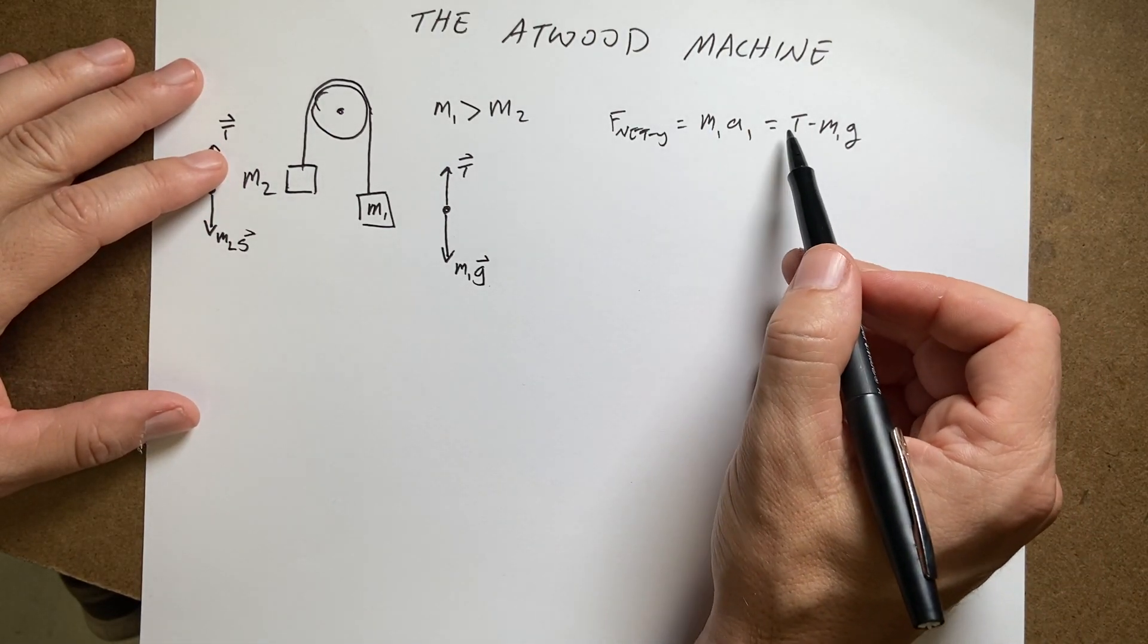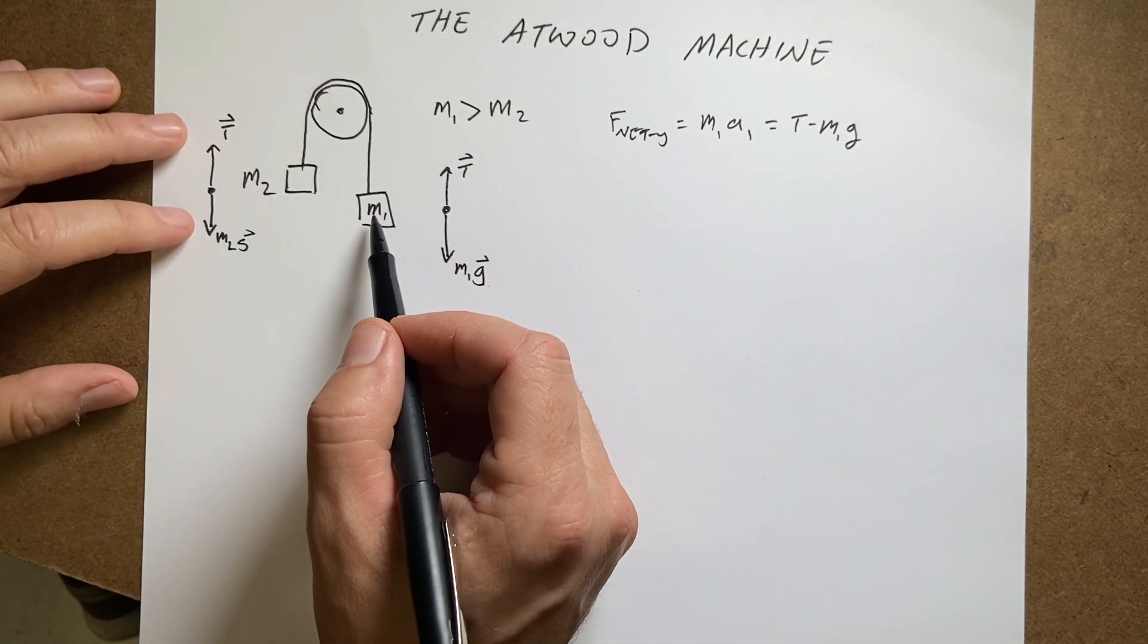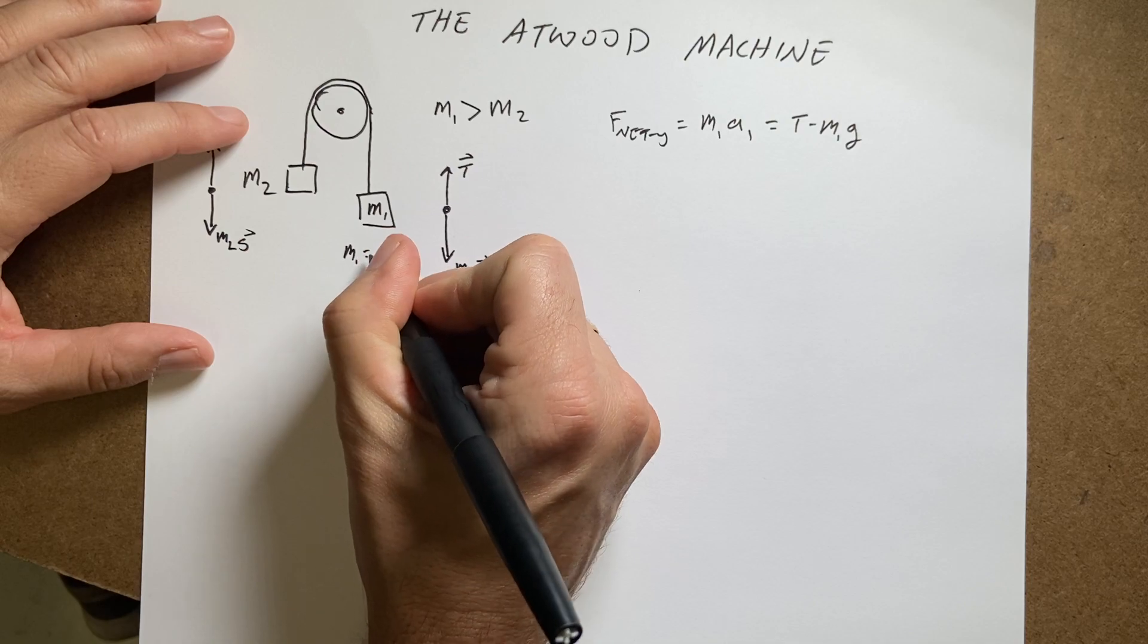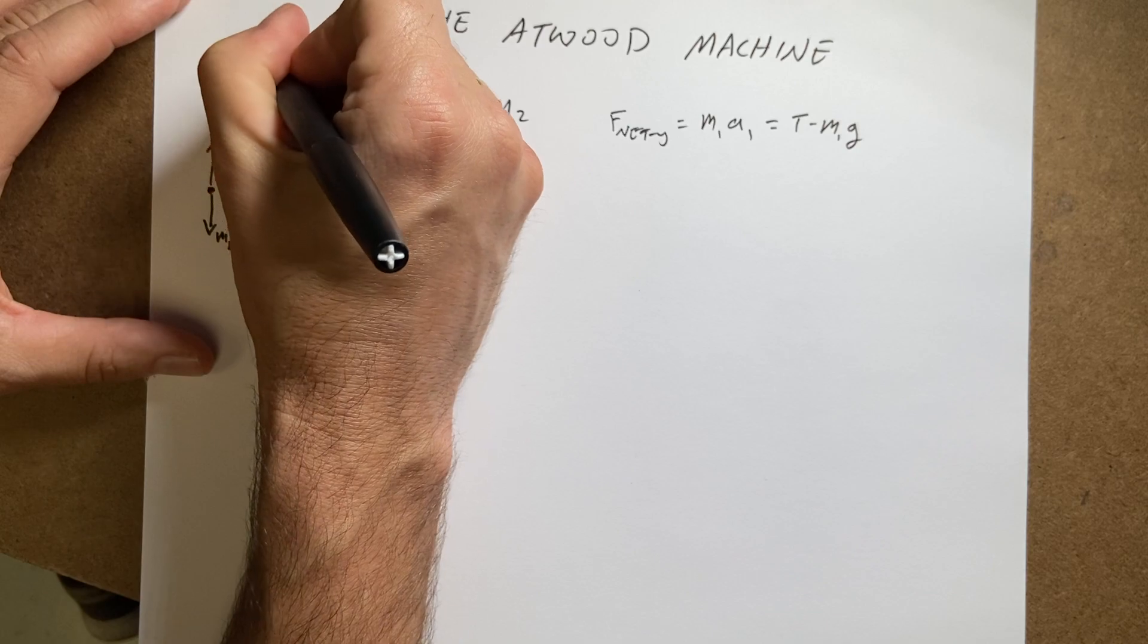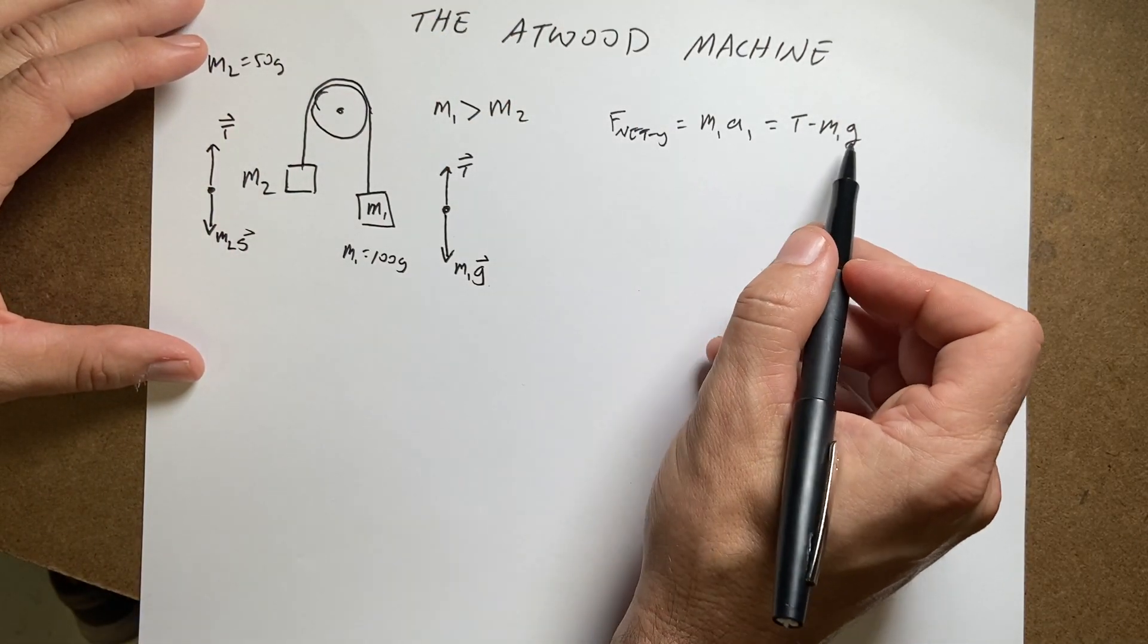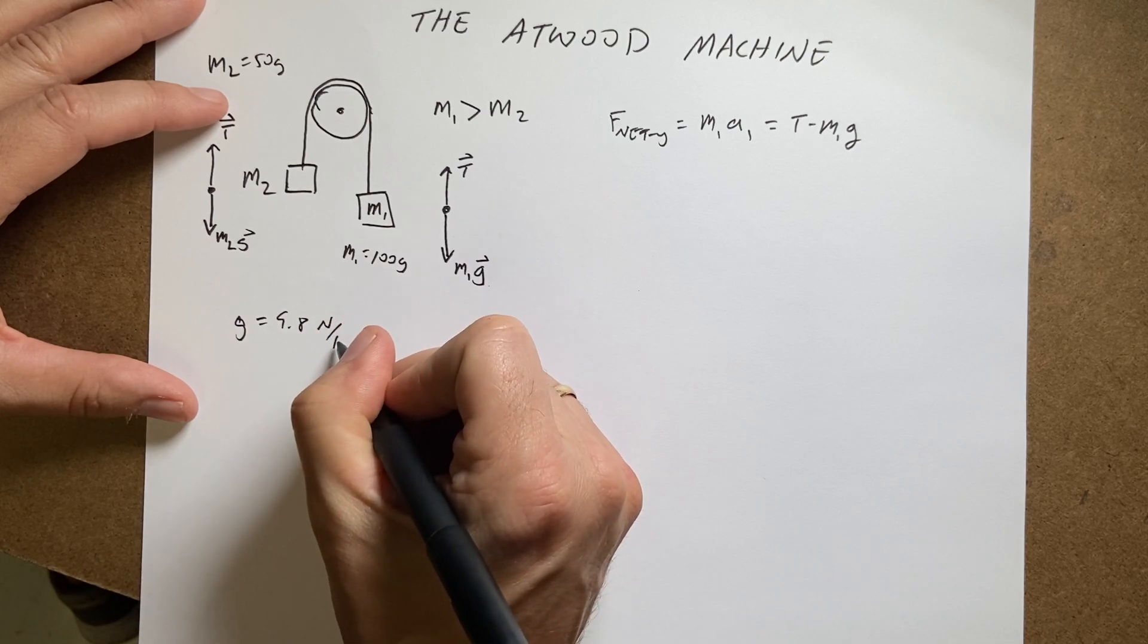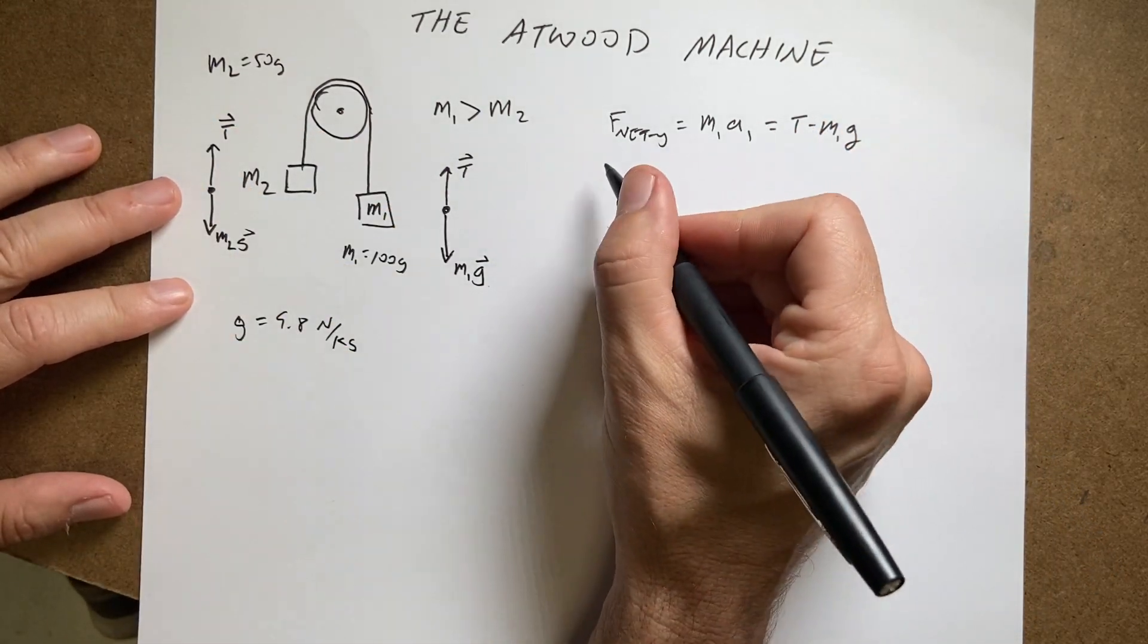Now, I don't know T and I don't know a. So even if I knew these masses, let's say that's 100 grams and that's 50 grams. We can pick that if you want. M1 equals 100 grams. M2 equals 50 grams. And then we can use that. But I know that. I know G. G is 9.8 newtons per kilogram. The magnitude of G is 9.8 newtons per kilogram. And I put it minus because it's in the negative y direction.